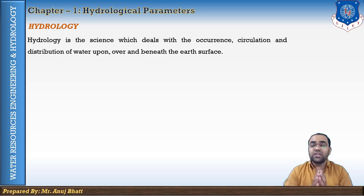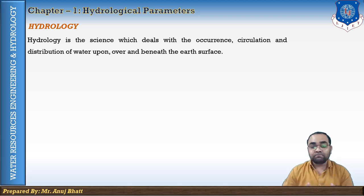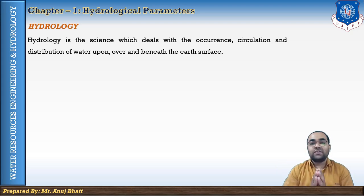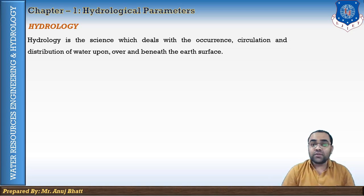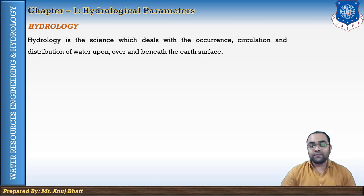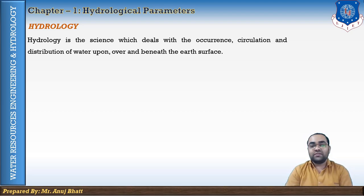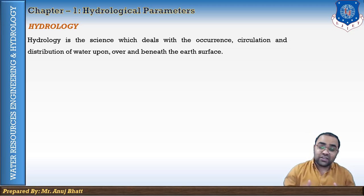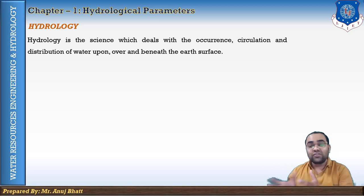Hydrology concerns the precipitation occurring on the ground as rainfall or snowfall, the flow of water over the ground surface and through underground strata of the earth. It also deals with the evaporation from water surfaces and soil surfaces, the transpiration from plants, and the infiltration of water through the ground surface. Hydrology is basically an applied science.